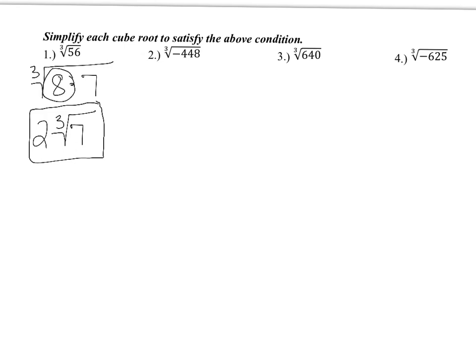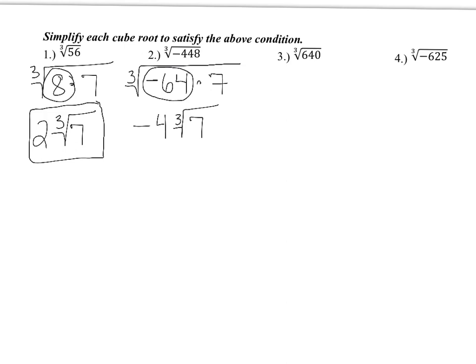The next one: the cube root of negative 448. Go ahead and start taking that number and dividing it by your perfect cubes. Because it's negative, the perfect cube you're going to use is going to be a negative number. So I divided negative 448 by 64, but I'm going to use negative 64 because I want to pull out that negative sign. So negative 448 can be broken up into negative 64 times 7. Negative 64 is my perfect cube, and the cube root of negative 64 is negative 4. What's left on the inside is the cube root of 7. You never want to leave a negative inside the cube root symbol because negative 1 goes into everything.